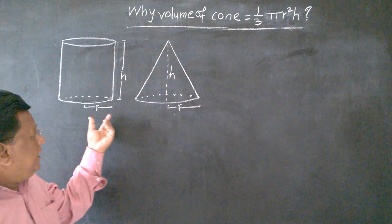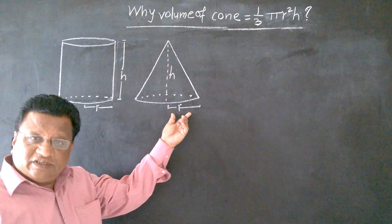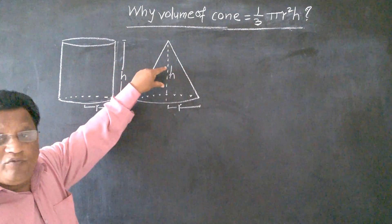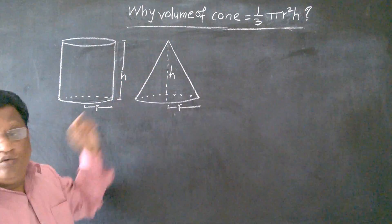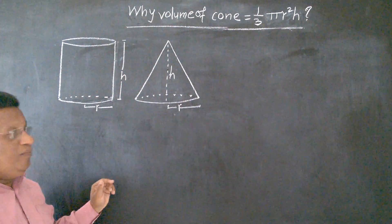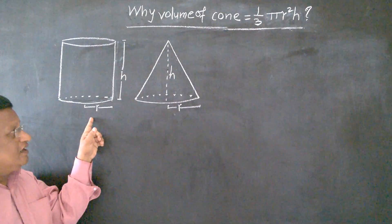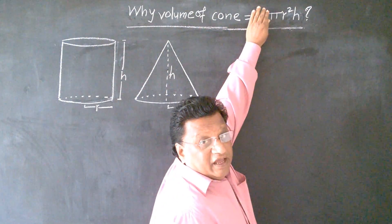The radius of cylinder and radius of cone is same. Also, height of cylinder and height of cone is also same. We know the formula for the volume of cylinder and that formula is pi r square h.